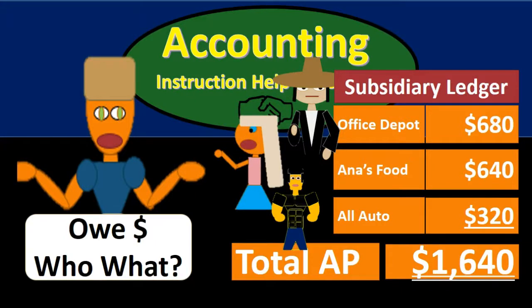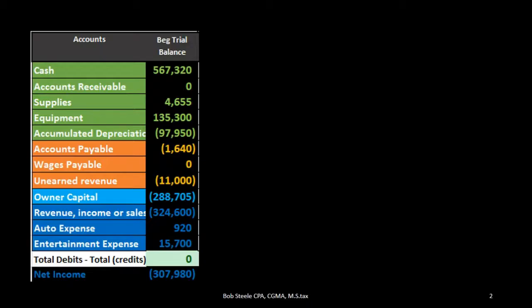In this lecture we're going to talk about the accounts payable subsidiary ledger. The accounts payable subsidiary ledger backs up the accounts payable account on the trial balance or the balance sheet. In this example we have a balance of $1,640 in accounts payable. If an owner asks how much money we owe to vendors, the answer is $1,640 — but the next question is: who do we owe that money to, and which vendors should we be paying first?